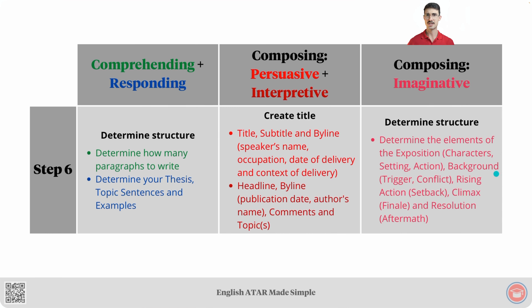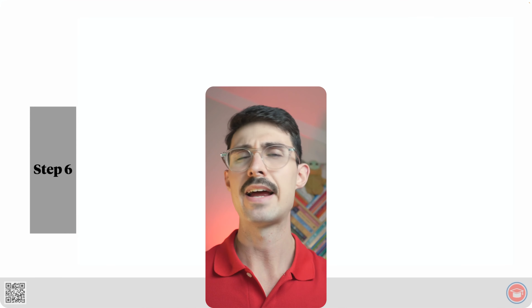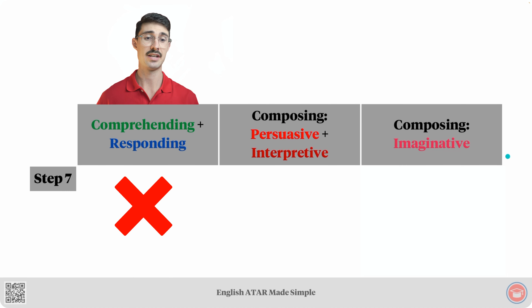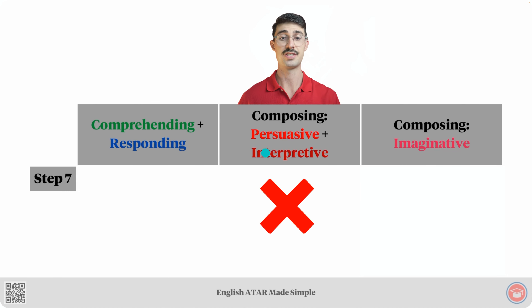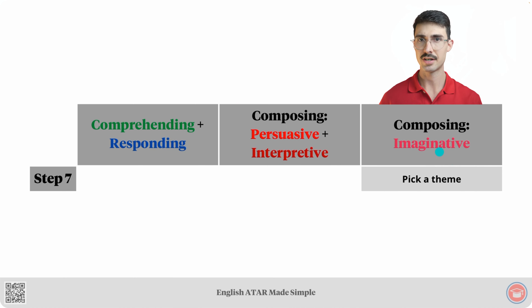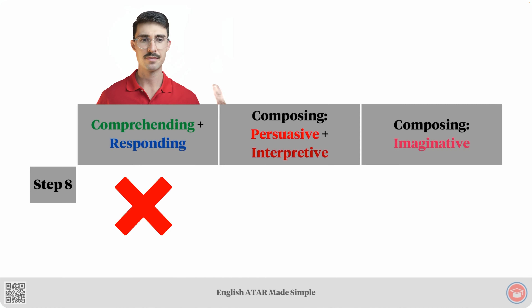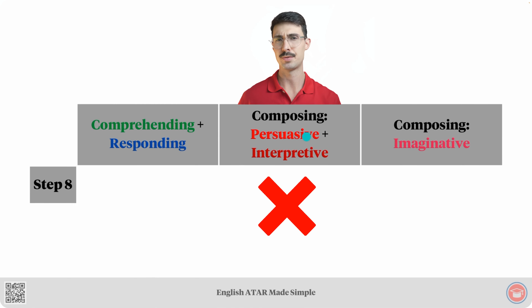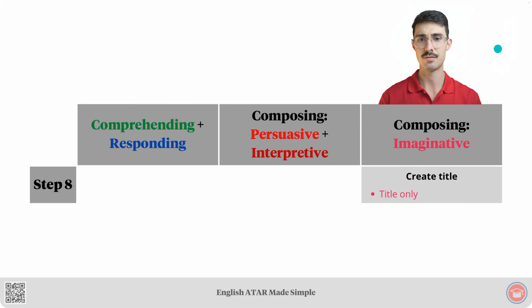For imaginative questions, step six is where we determine structure. Then step number seven is not applicable for comprehending and responding or persuasive and interpretive texts, but for imaginative texts we pick a theme. Similarly, the final step doesn't exist for comprehending and responding or persuasive and interpretive questions, but for imaginative texts we have the create title step.